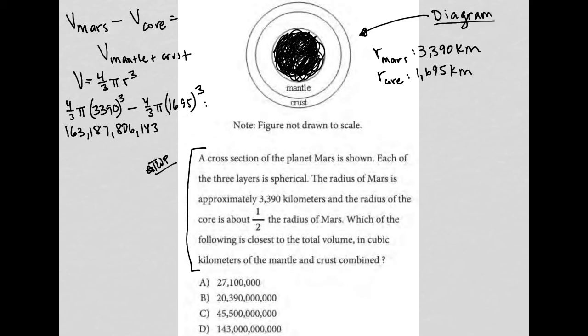There's some decimal points, but when I look down to my answer choices, these answers are very far apart: 27 million, 20 billion, 45 billion, 143 billion. So, I'm not going to deal with the decimal points for right now.